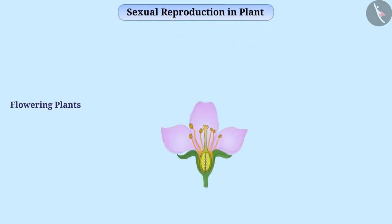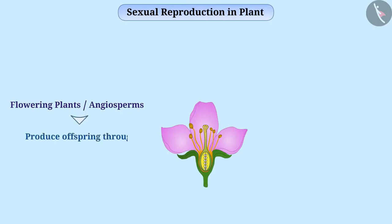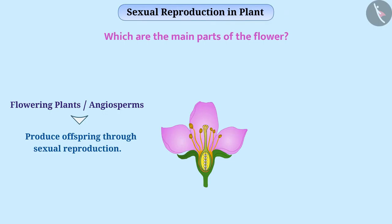Flowering plants, also called angiosperms, produce offspring through sexual reproduction. The reproductive organs of these plants are found in flowers. Can you tell me which are the main parts of the flower? Let me tell you.